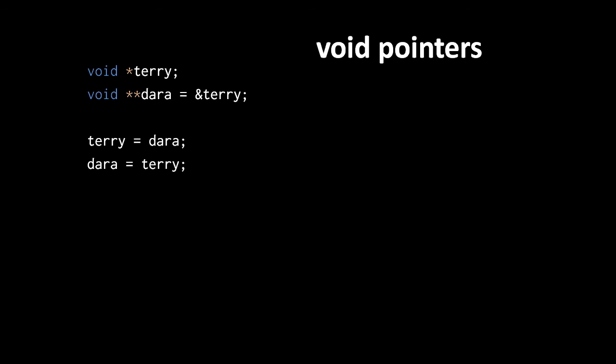Here we have a void pointer variable terry, and a void pointer pointer variable dara, and we assign the reference of terry to dara. Because pointers of all types are just addresses, we can convert pointers of any type to pointers of any other type with a cast. But the special thing about void pointers of any degree is that we needn't cast other pointer types to assign the void pointer variables.